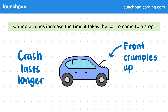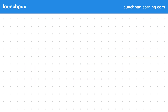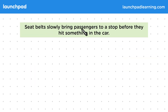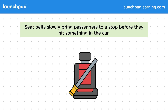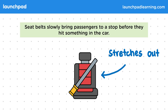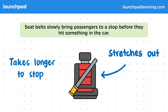Now what about the insides of the car? What safety features directly affect the passengers? Seatbelts slowly bring passengers to a stop before they hit something in the car. The force of a crash will often throw passengers out of their seat, which is dangerous as they'll hit the dashboard or the seat in front with a lot of momentum, and they'll be stopped suddenly by a large reaction force. That's why it's important for passengers to wear their seatbelts. These will stretch out when the passenger pushes against them. As a result, it will take them longer to stop, and it will be a much smaller force that causes them to lose their momentum.